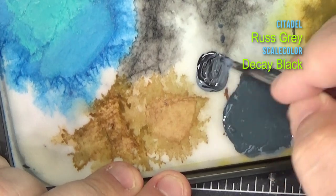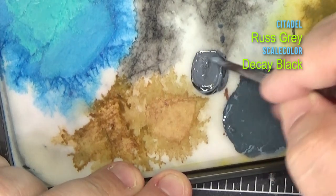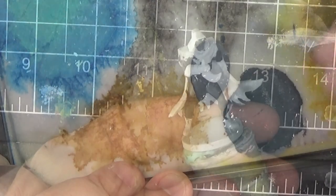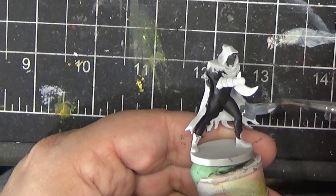Next, we'll paint the inner part of the Phantasm's cloak by mixing some rust gray and a little bit of decay black to darken it. This will only be applied to the underside of the cloak.